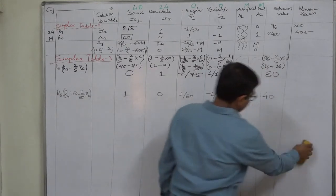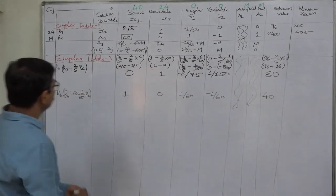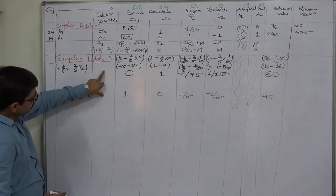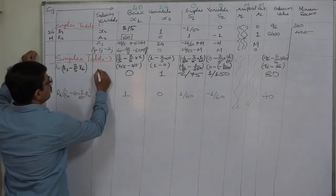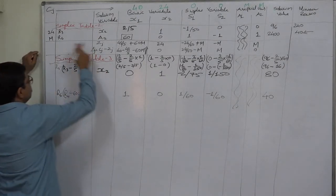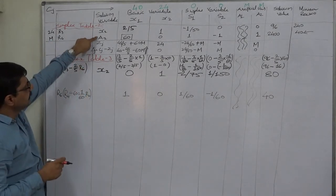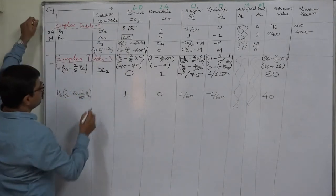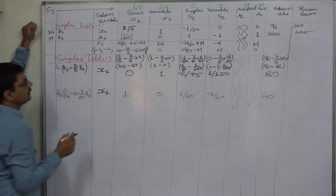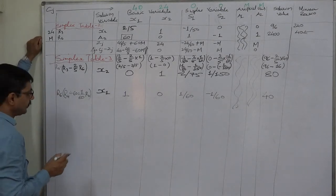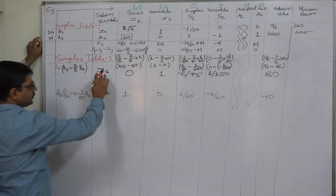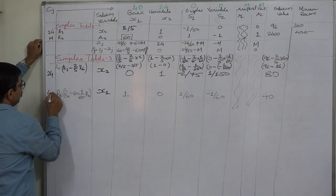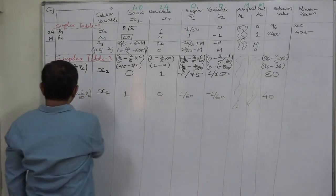Now we need ZJ values, but first we substitute variables in the solution variable column. The first row has no change since it was not the key row. Since R4 was the key row, we drop its variable A2 and X1 takes its place as the key column variable. So now X2 and X1 are in the solution variable column. The coefficient of X2 in the Z function is 24 and X1 is 40.